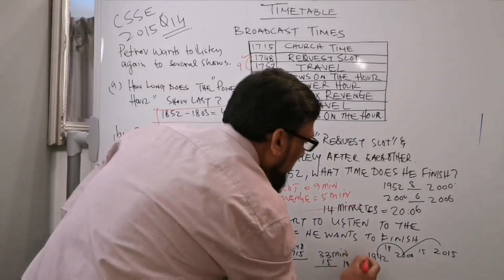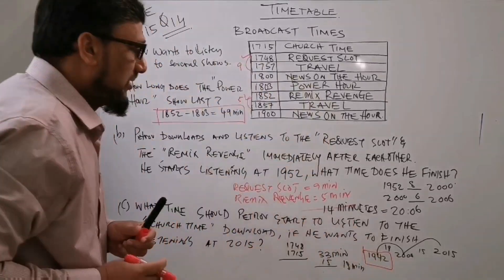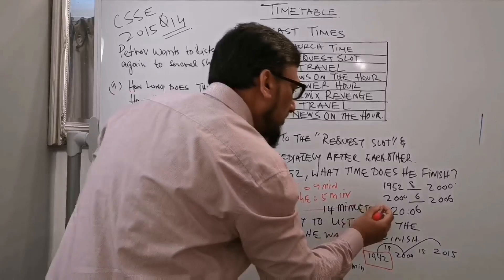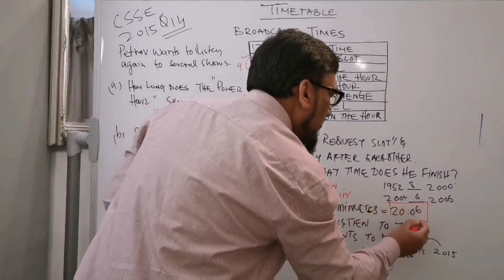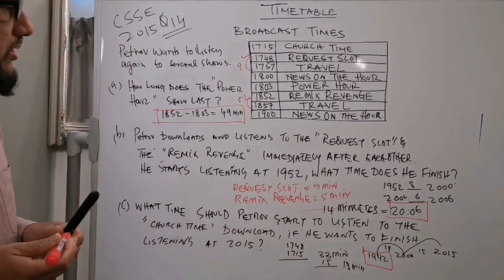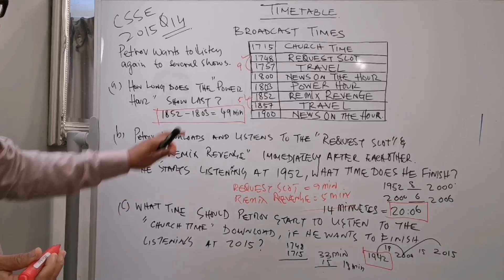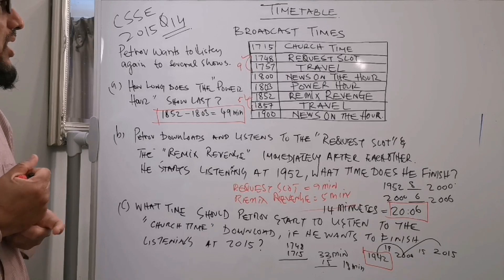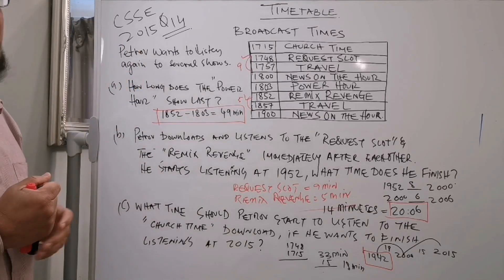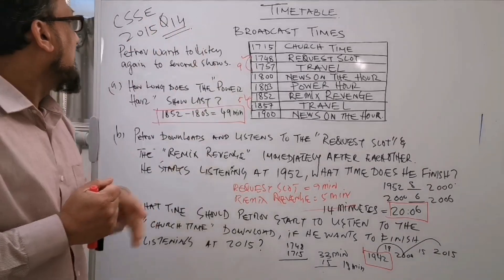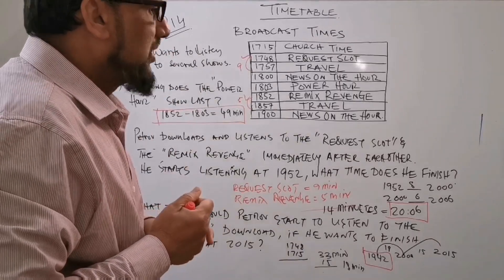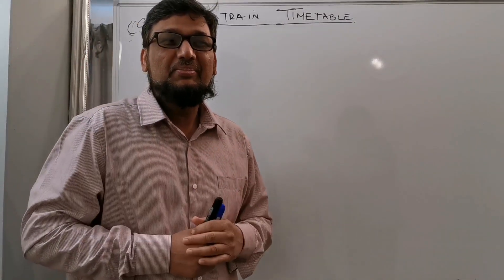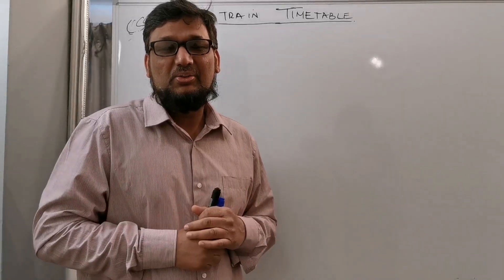So your final answer for part C is 1942. The answer for part B is 2006. And part A is very easy — simply 49 minutes. This question came in CSSE 2015, question number 14. If you like this video, please subscribe and see you in the next video. Bye-bye.